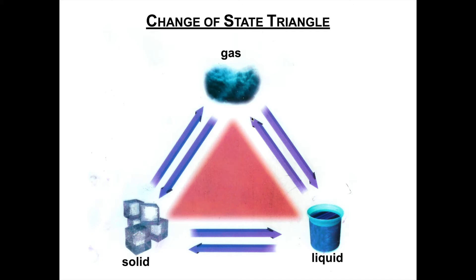Let's look at our first one. We're going from a liquid to a gas — the arrows show that change of state from liquid to gas. Do you remember what that one's called? Liquid changing to a gas is called vaporization. Now during vaporization, what happens to make that occur? What do we have to do to the liquid to make it change into a gas? We need to add heat to make that happen. With all these different changes of state, if you know what's happening to the particles, you'll be able to easily determine whether heat is added or removed.